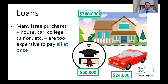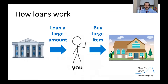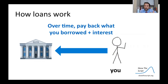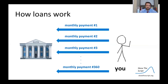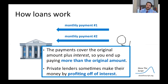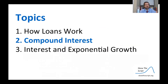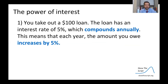To start, we're going to talk about how loans work. Loans are really important for making large purchases — mainly a house, your car, your tuition — things that are too expensive to pay all at once. For example, for a $340,000 house, it's going to be difficult to roll up with that amount of cash. The idea is that people will take out a loan from a bank, which allows you to buy a large item. Over time, you pay back what you borrowed to the bank plus interest. This breaks down into monthly payments — in this case, 360 monthly payments — and you end up paying more than the original amount. Private lenders especially will sometimes make their money by profiting off of this interest. Now we're going to talk about compound interest and how you can get into trouble when taking out a loan with too much compound interest.